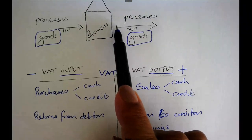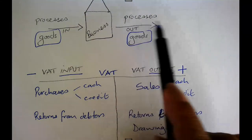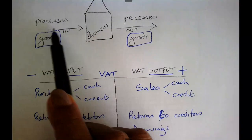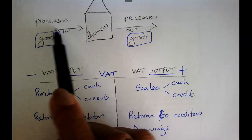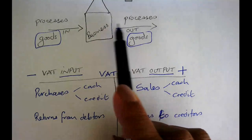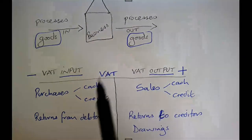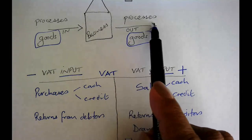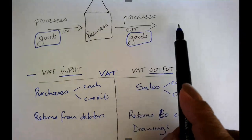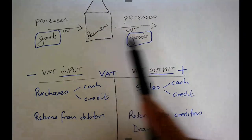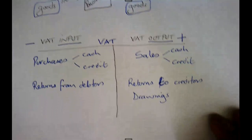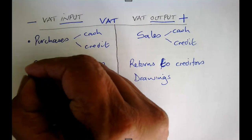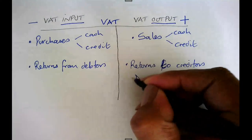When the owner takes goods, the goods move out of the business. For returns to creditors: I bought items on credit, they came in, now I'm returning them — they're going out. For returns from debtors: when I sold to debtors, items flowed out of my business; now the debtors are returning items back in. So just ask: is the item flowing in or flowing out?